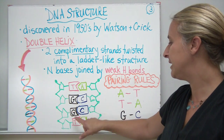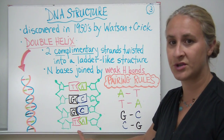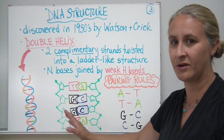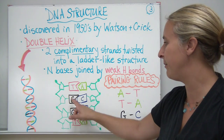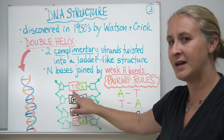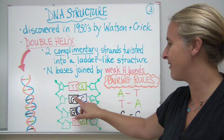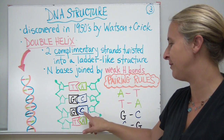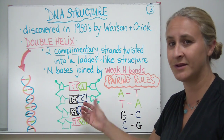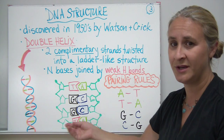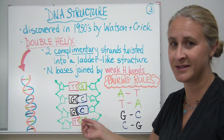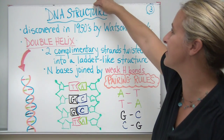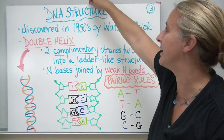Looking at this strand, we have two complementary strands. We have a T on one side and an A on the other, a G with a C, a G with a C, and a T with an A. It could be reversed — we could have an A on this side and a T on the other. It just so happens this is what this particular strand looks like.